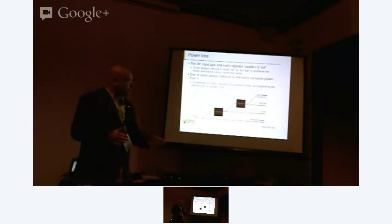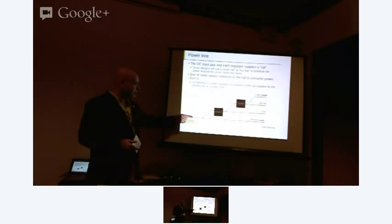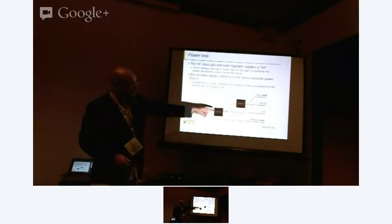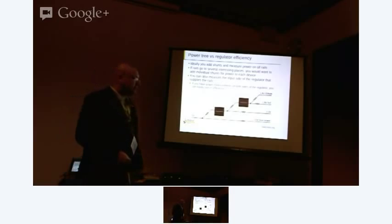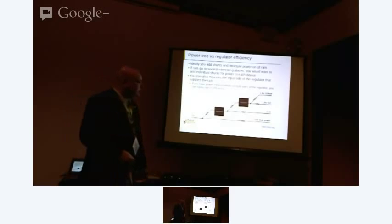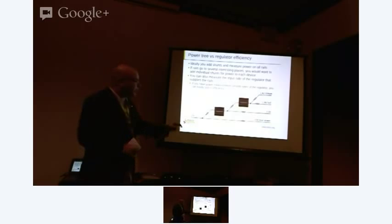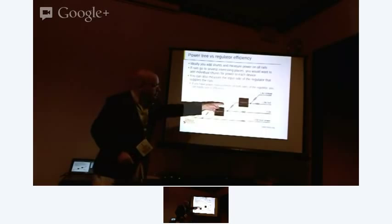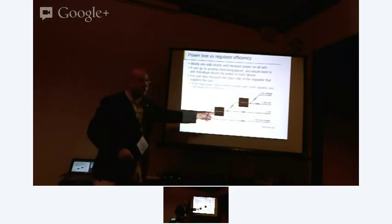On these boards for SOCs there's what you'd call a power tree. Power comes in from the DC jack, then there's a set of regulators — sometimes a few deep — that provide different voltages needed throughout the SOC. Ideally, we'd add shunts everywhere. With that information we can not only see who's taking which power separately, but we can also assess regulator efficiency — we know how much power went into the regulator, and if we add up all the output loads we can figure out how much power was lost in the regulator.